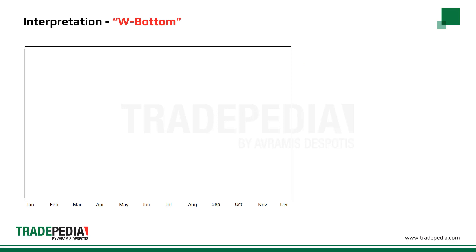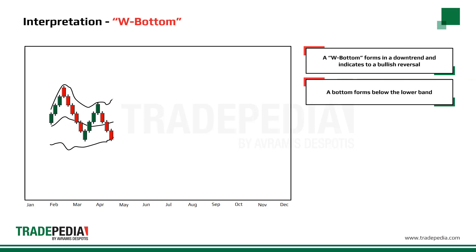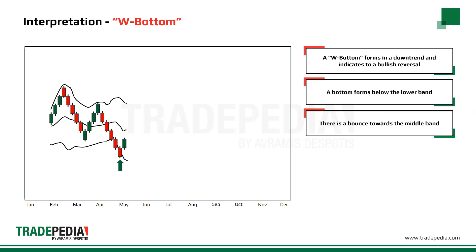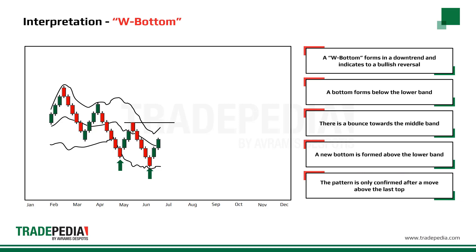One of the signals from Bollinger Bands is a W bottom. The W bottom forms in a downtrend and indicates a bullish reversal. First, a bottom forms below the lower band. Then there is a bounce towards the middle band, and then a new bottom is formed above the lower band. The pattern is confirmed after a move above the last top.